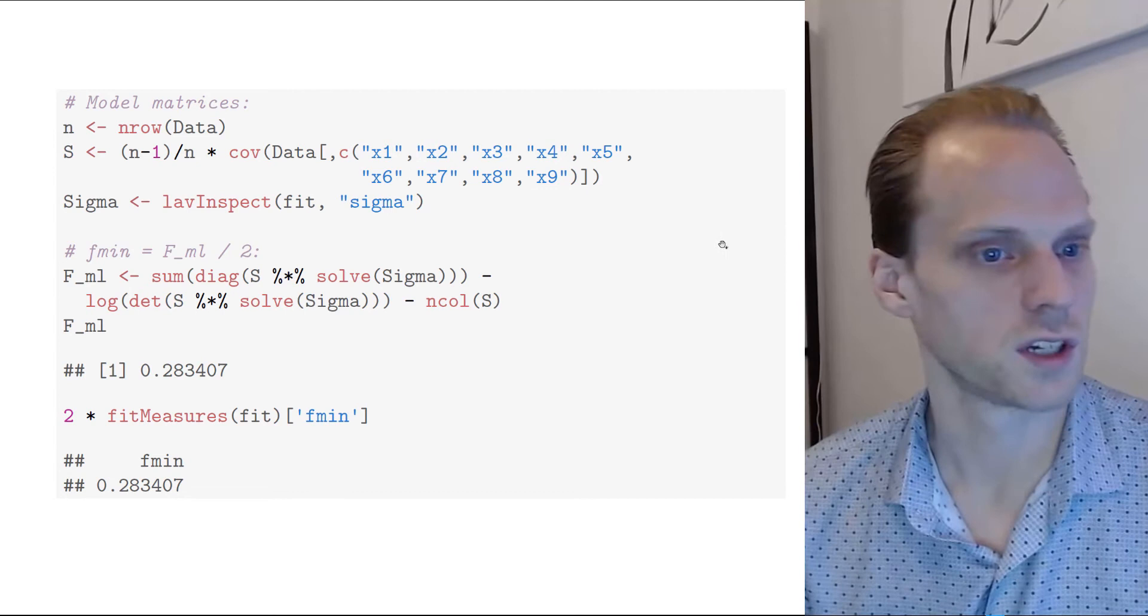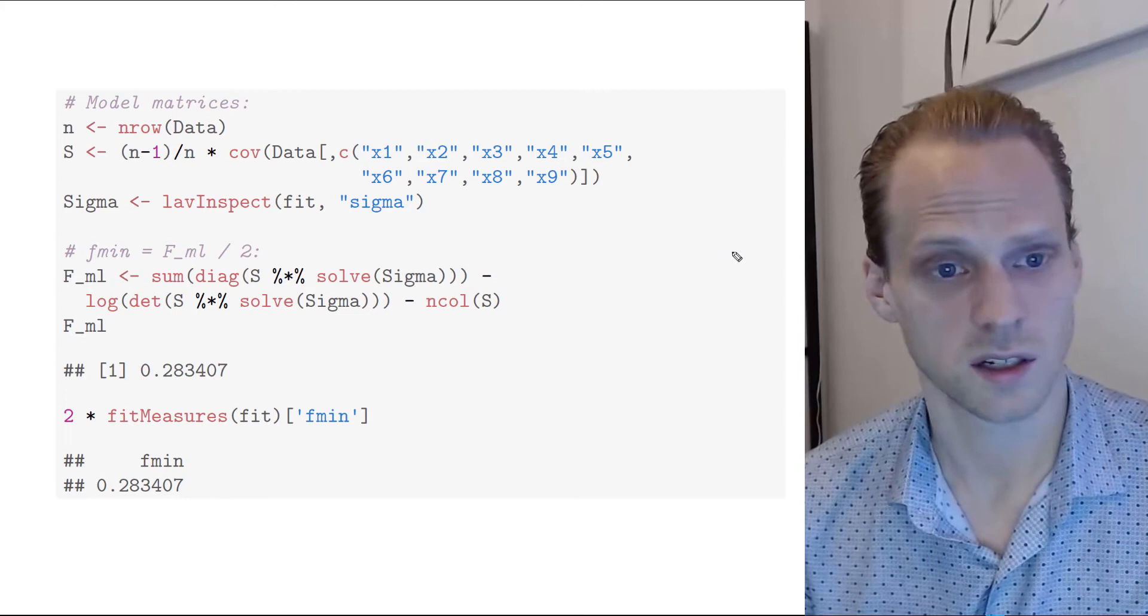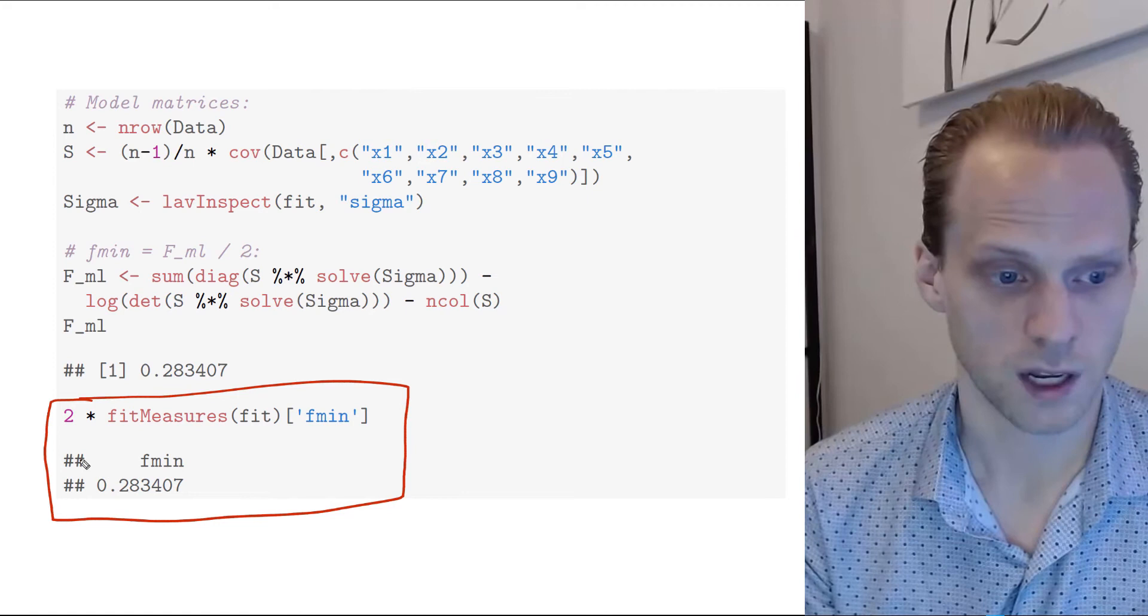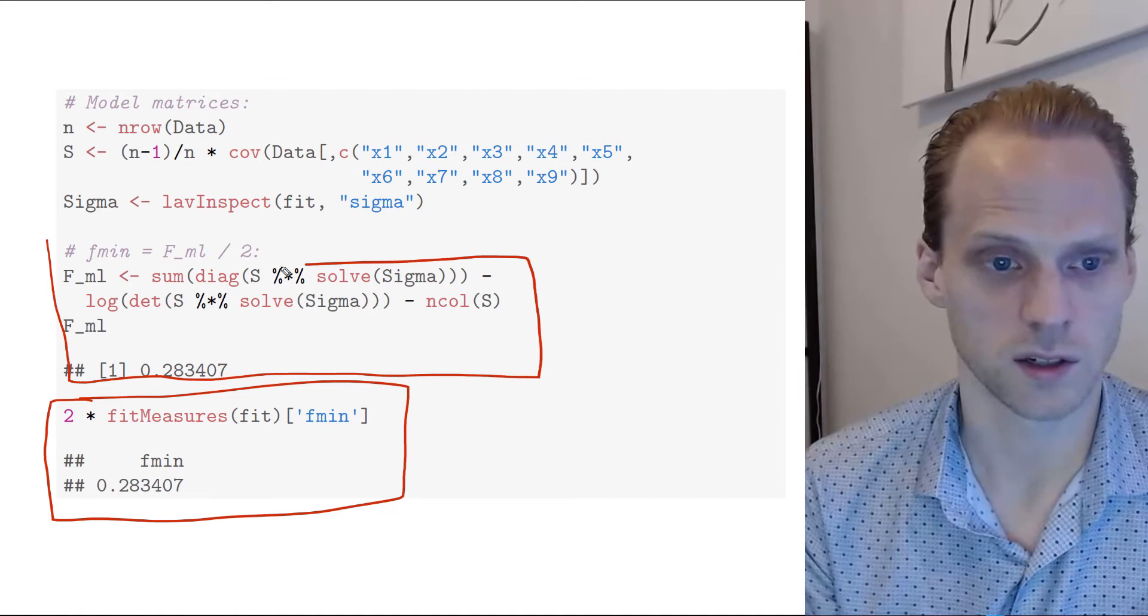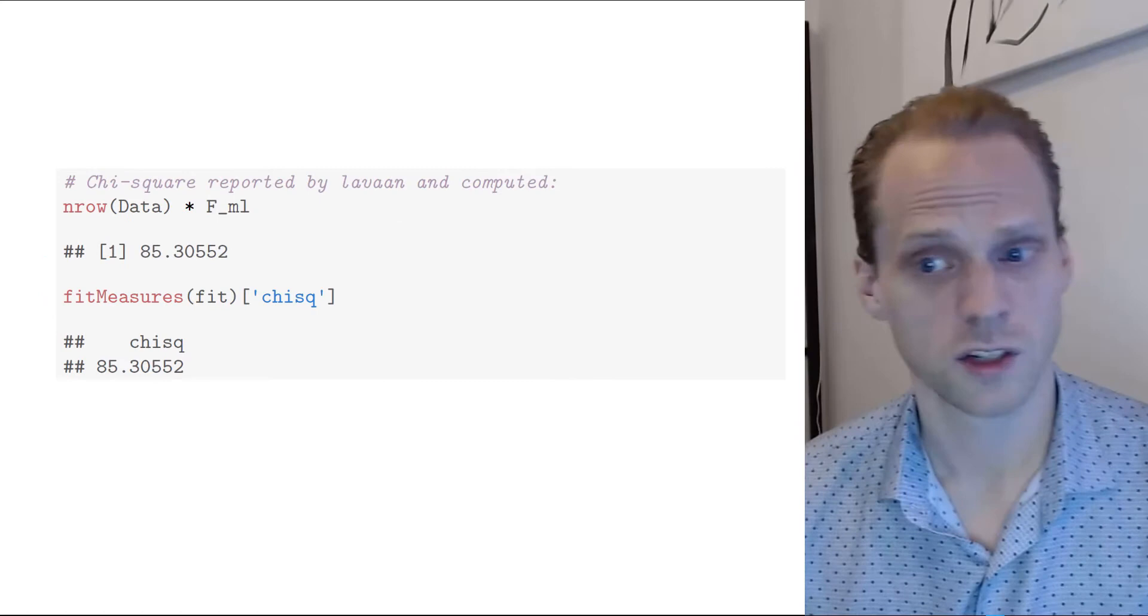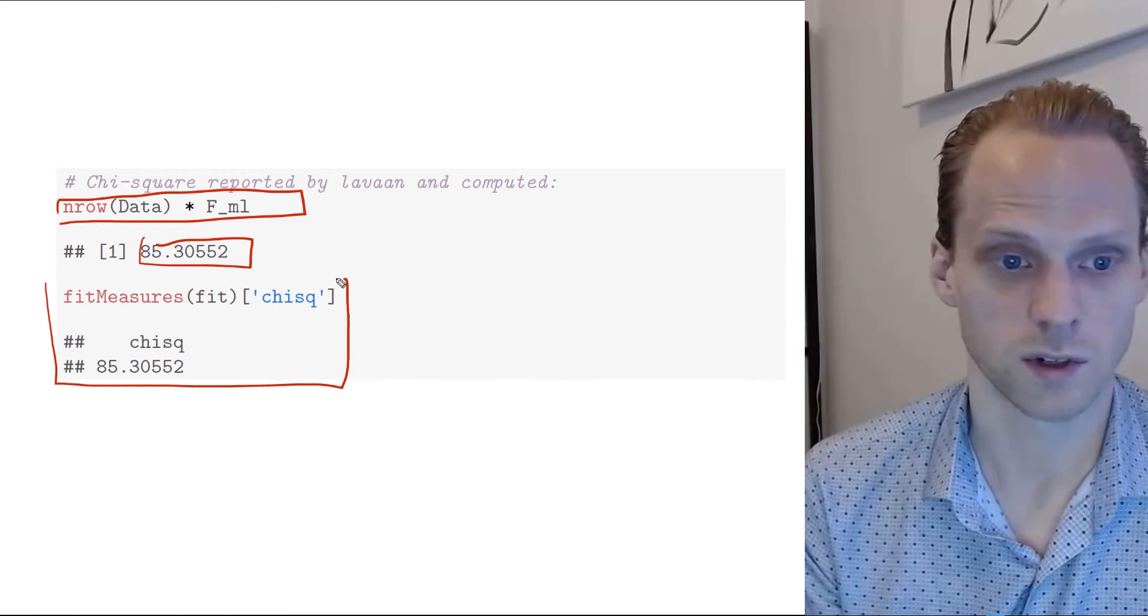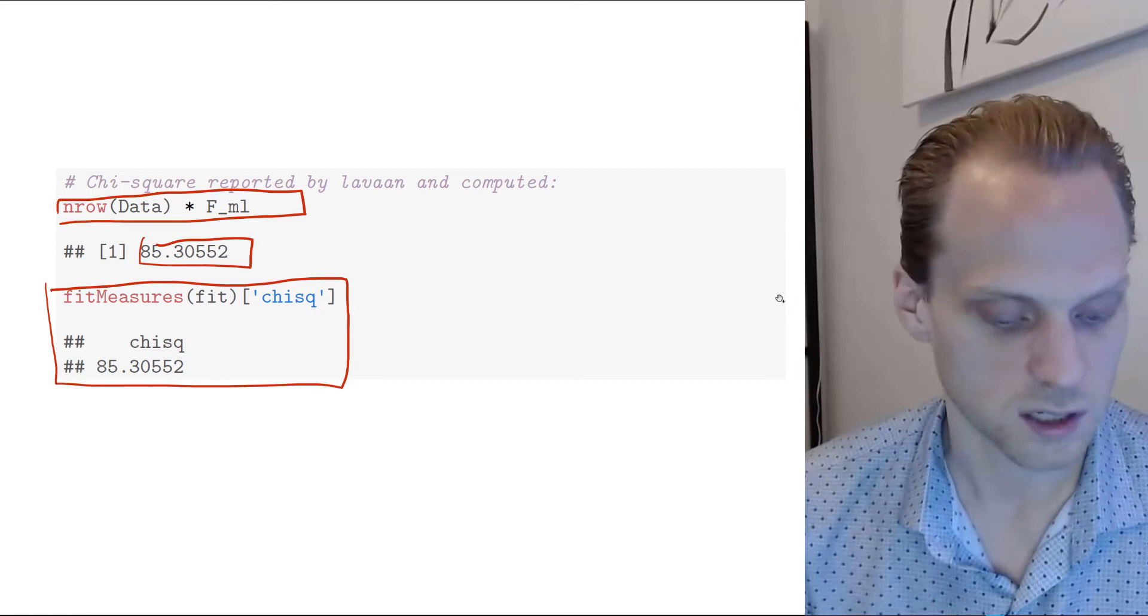Alright, so let's first look a bit into R to show you that indeed this fmin and this FML is exactly what you get from the software. This is just some Lavaan code that gives you the fmin that's reported by Lavaan from the optimizer. And two times this equals exactly what we get from filling in this equation on the last slide manually, which is the same value here of the FML. And then to show that this is indeed equal to this chi-square distribution, we simply multiply this with n. Then we get this 85.3 here. And then if you look in Lavaan and we ask for the chi-square test, it's the exact same value. So this is where it comes from. It's not magic. You can actually just obtain this yourself as well if you want.